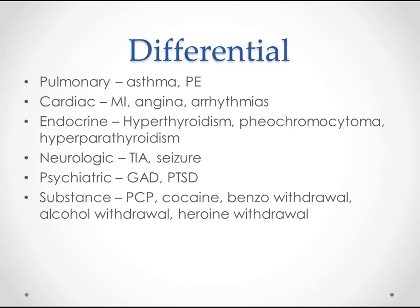On the differential, we've got pulmonary causes like asthma and PEs — they're going to have the shortness of breath that leads to anxiety. A PE combines chest pain, shortness of breath, and sometimes palpitations, getting pretty close to meeting criteria for a panic attack. Most people are afraid they're going to have an MI when they have chest pain, especially overweight men in their 50s, so you've got to rule that out too.